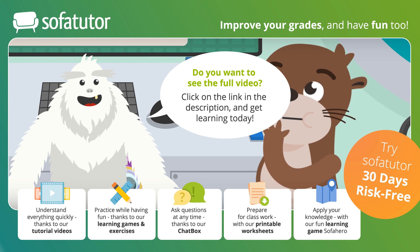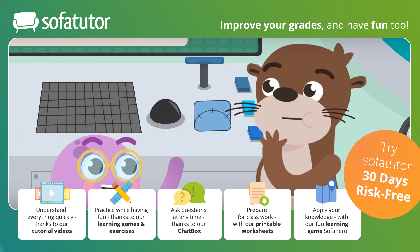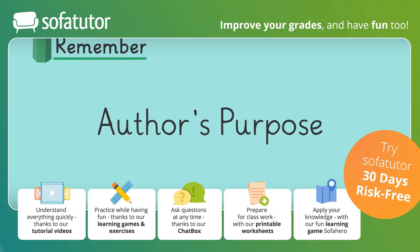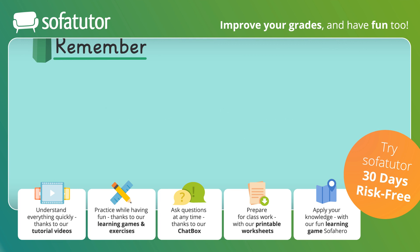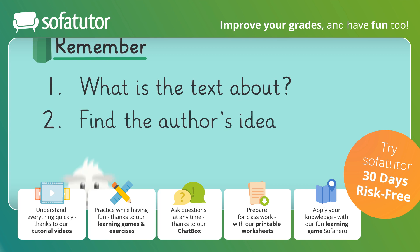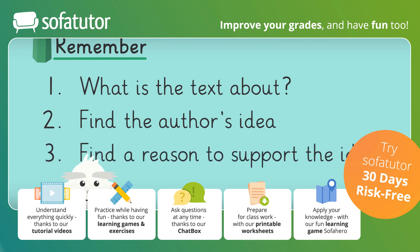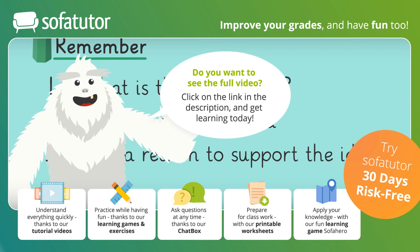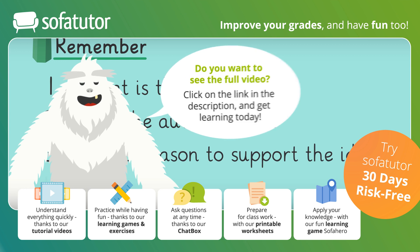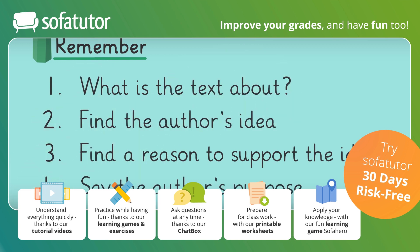While Pearl and Otis make a plan to help, let's remember. Today, we learned about the author's purpose, which is the reason that they write something. When trying to find an author's purpose: first, think about what the text is about; next, find the author's idea; then, find a reason to support the idea by looking for words like should and need or good and bad; finally, say the author's purpose or reason for writing.